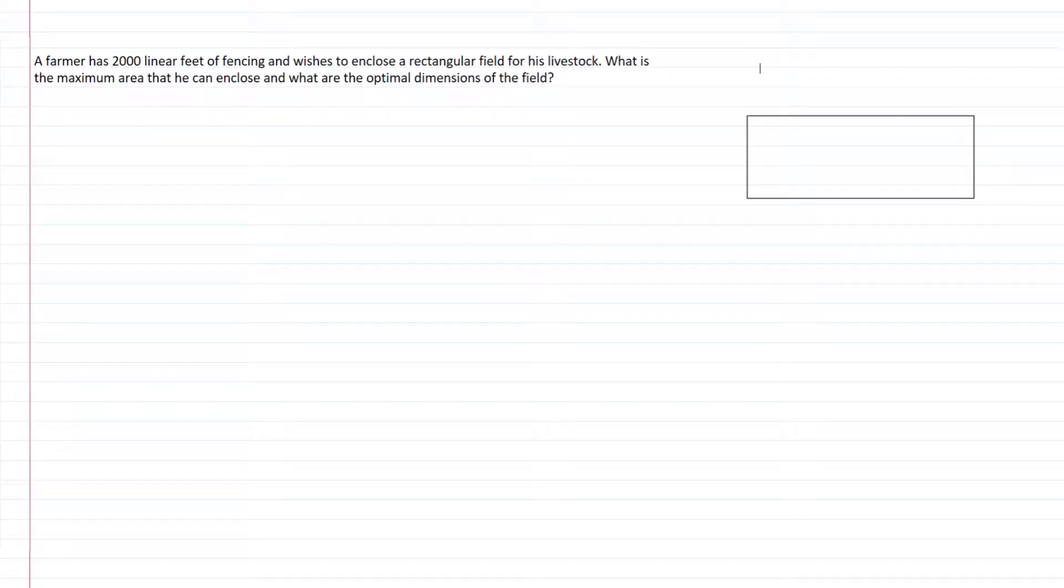Today we're going to look at a word problem. A farmer has 2,000 linear feet of fencing and wishes to enclose a rectangular field for his livestock. What is the maximum area he can enclose and what are the optimal dimensions of the field?